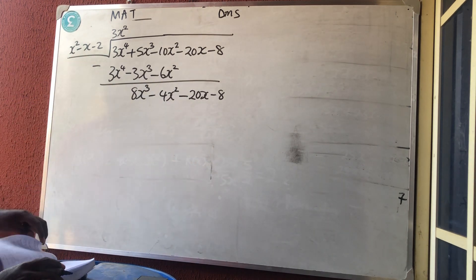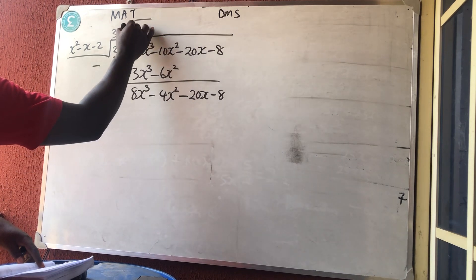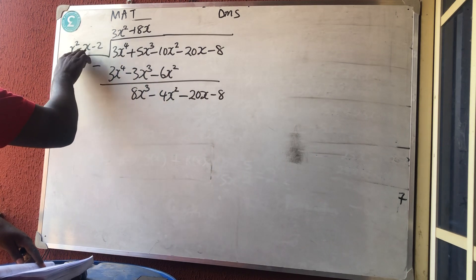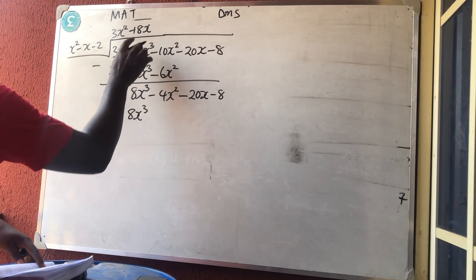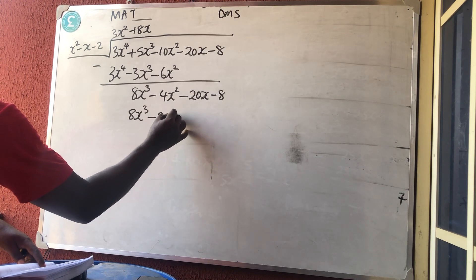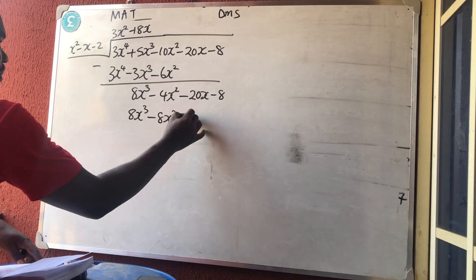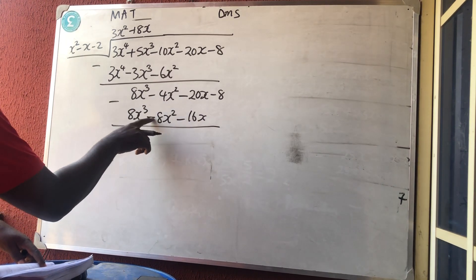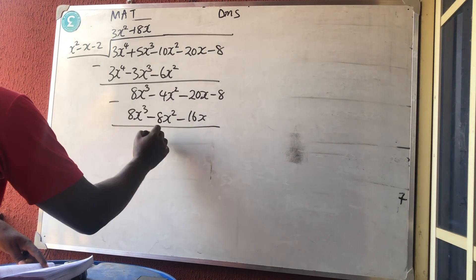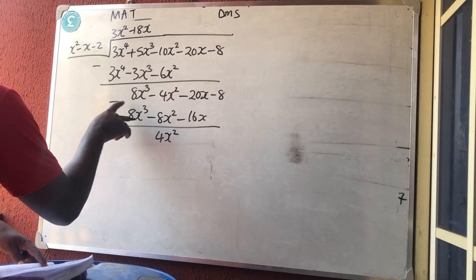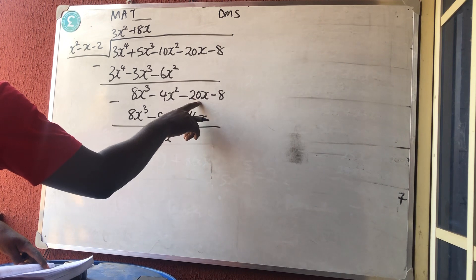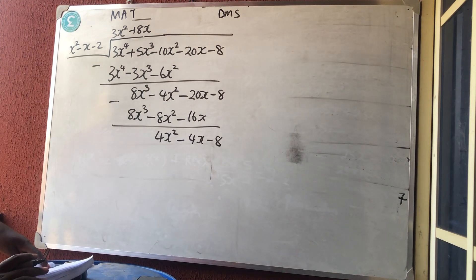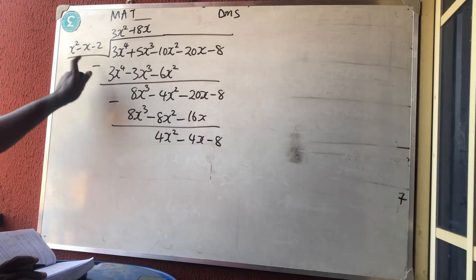The remainder's highest power is x³, still greater than x² of the divisor, so continue. Division: 8x³ divided by x² gives +8x. Multiplication: 8x times x² = 8x³, 8x times −x = −8x², 8x times −2 = −16x. Subtraction: −4 + 8 = 4x². Minus times minus is plus, so −20 + 16 = −4x. Bring down −8.